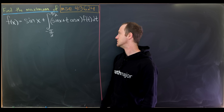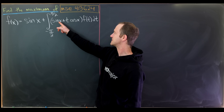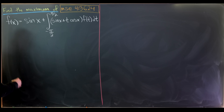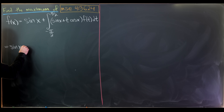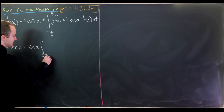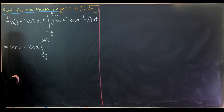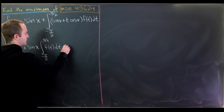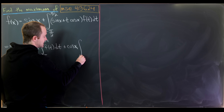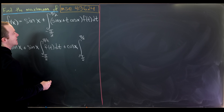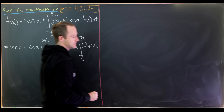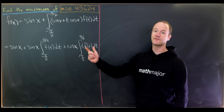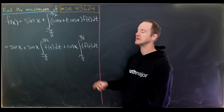So let's see how we might do this. Since this integral is with respect to t, and we have sine of x and cosine of x in here, those are constant with respect to the integral and thus we can factor them out. That leaves us with sine of x, and then plus sine of x times the integral from minus pi over 2 to pi over 2 of f of t dt, and then plus cosine of x times the integral from minus pi over 2 to pi over 2 of t times f of t dt.